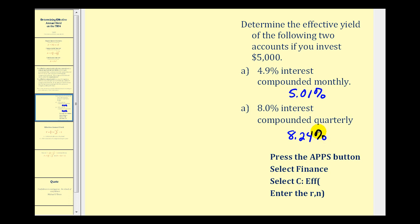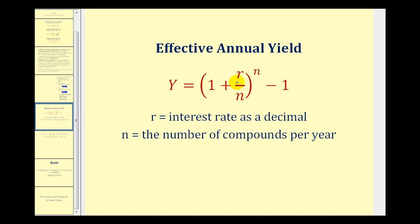So as you can see it's a pretty straightforward process. But remember one of the main differences is in the formula we express the rate as a decimal and on the calculator we enter it as a percentage. I hope you found this helpful.